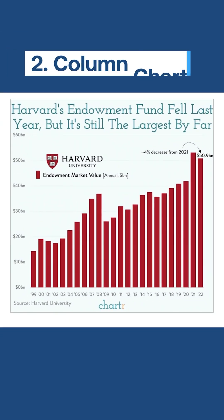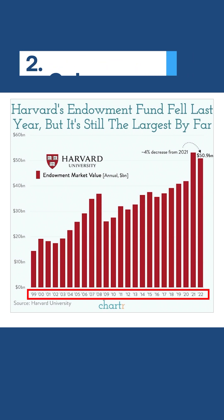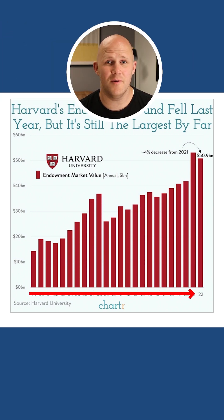Column charts are also good for comparing categories, but usually best for comparisons over time. That's because our brains naturally associate time with moving from left to right.